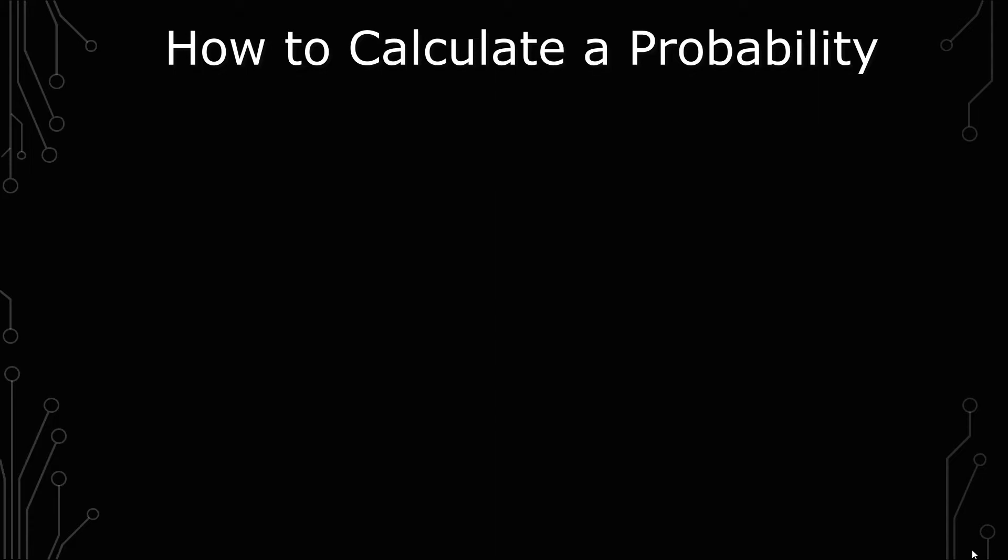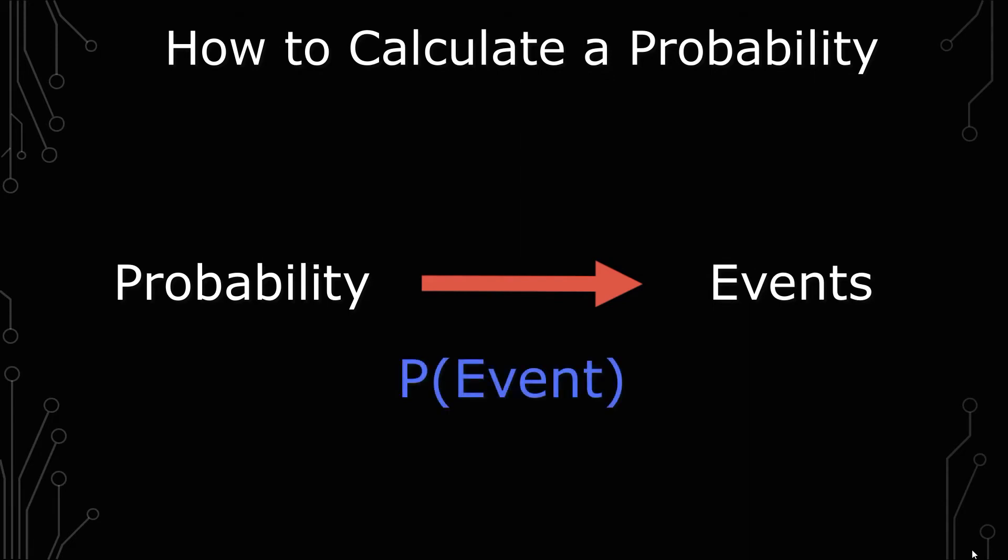The first thing I want to mention though, is not to subscribe or like or any of those other things, but to mention that probability is only associated with events. You can't make a probability of something that just simply exists. So you can't say, well, what's the probability I'm here?